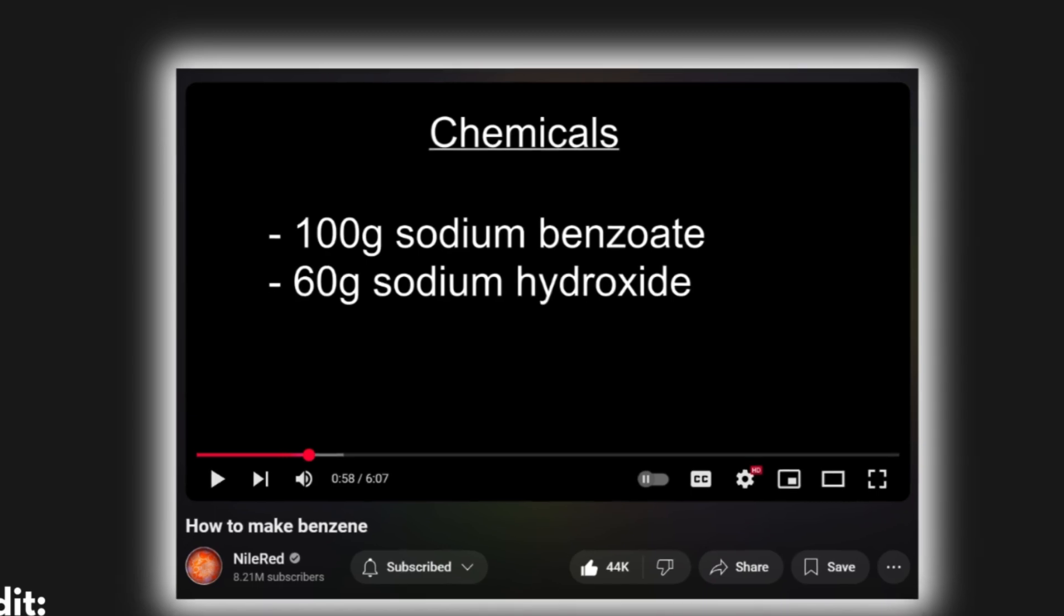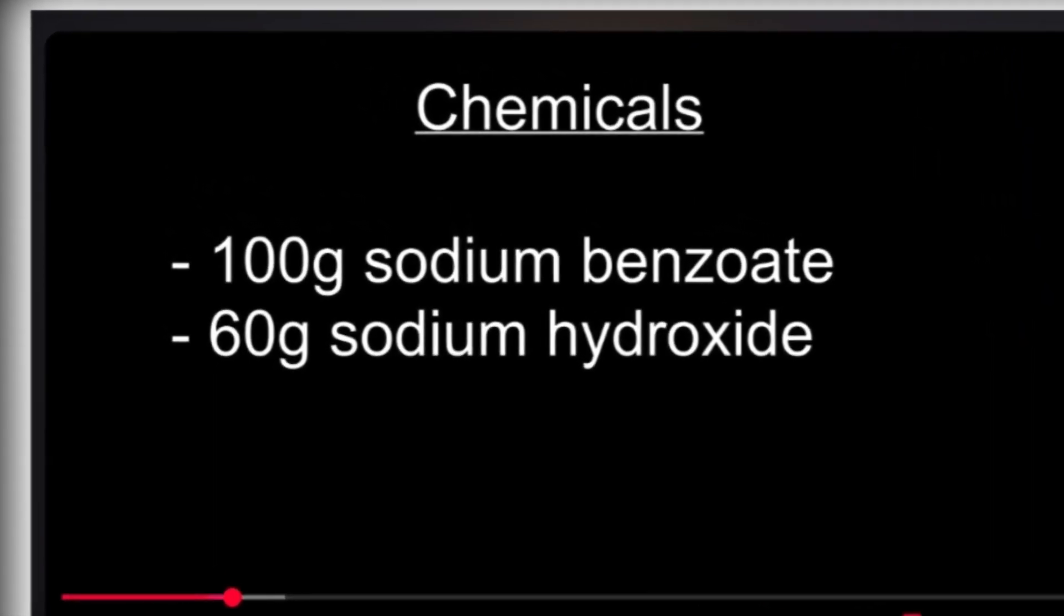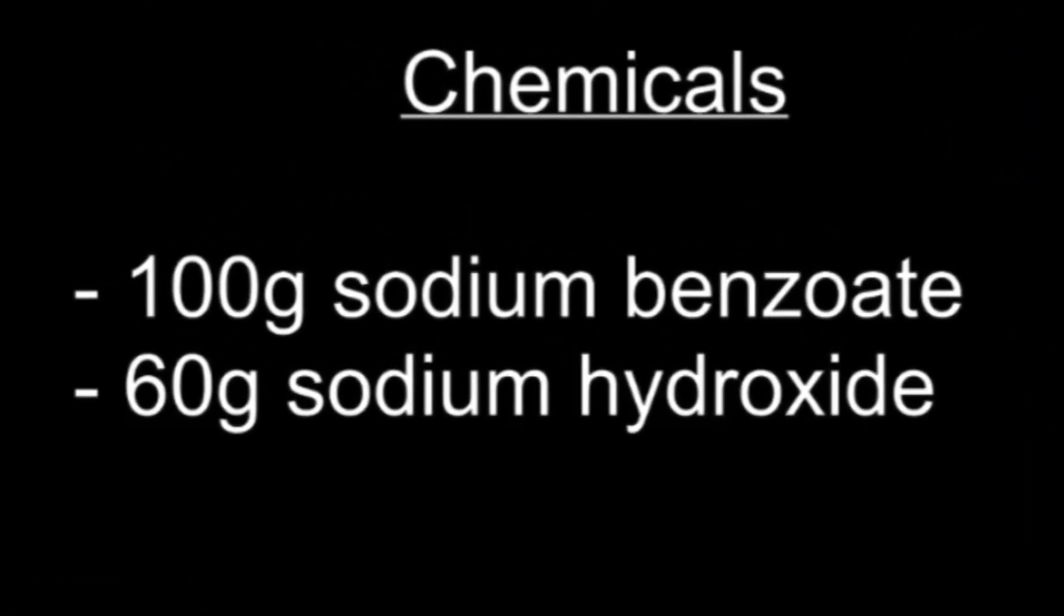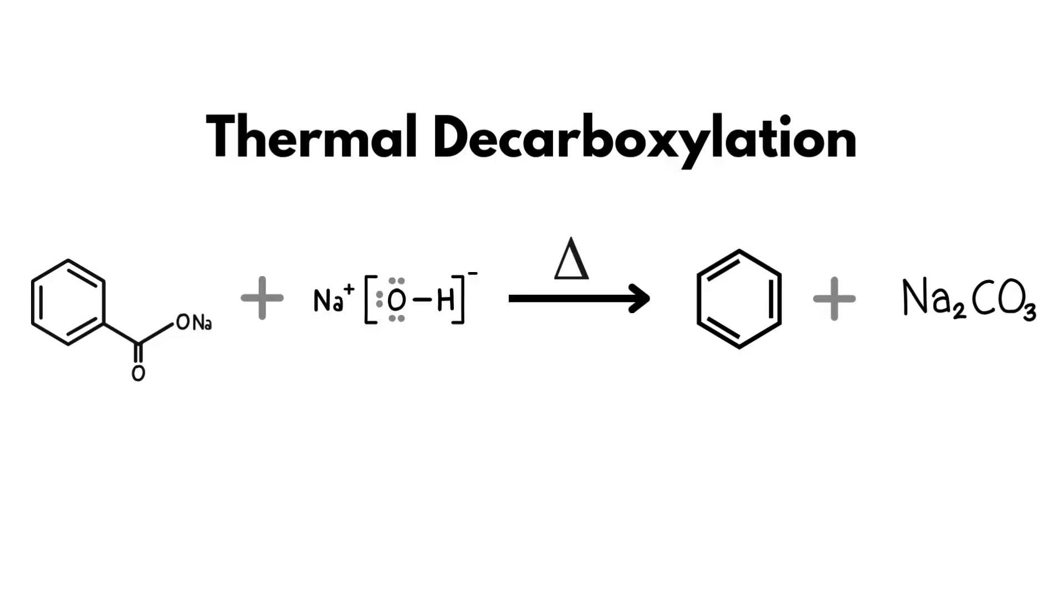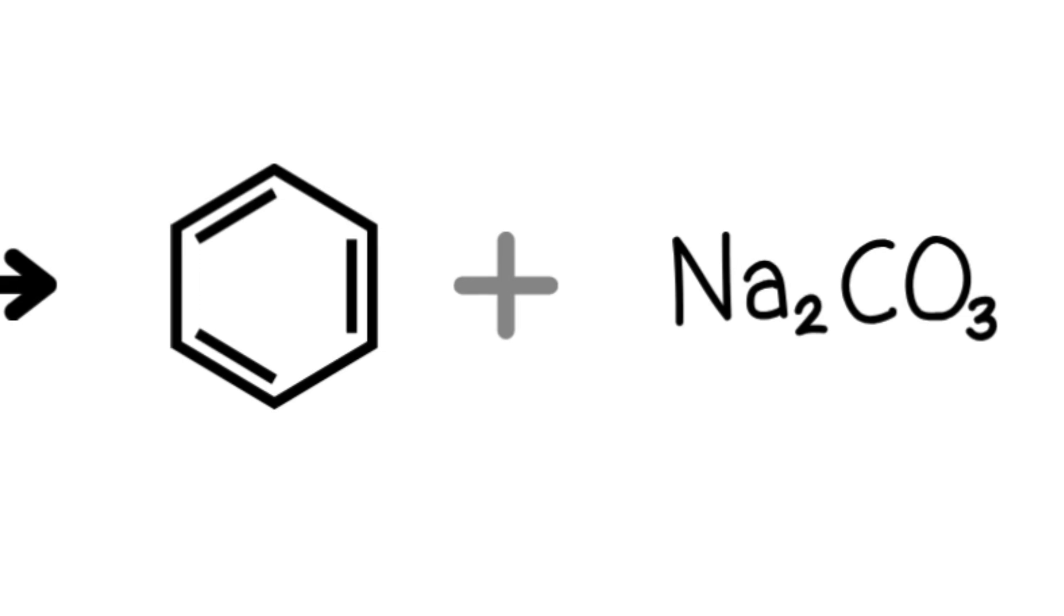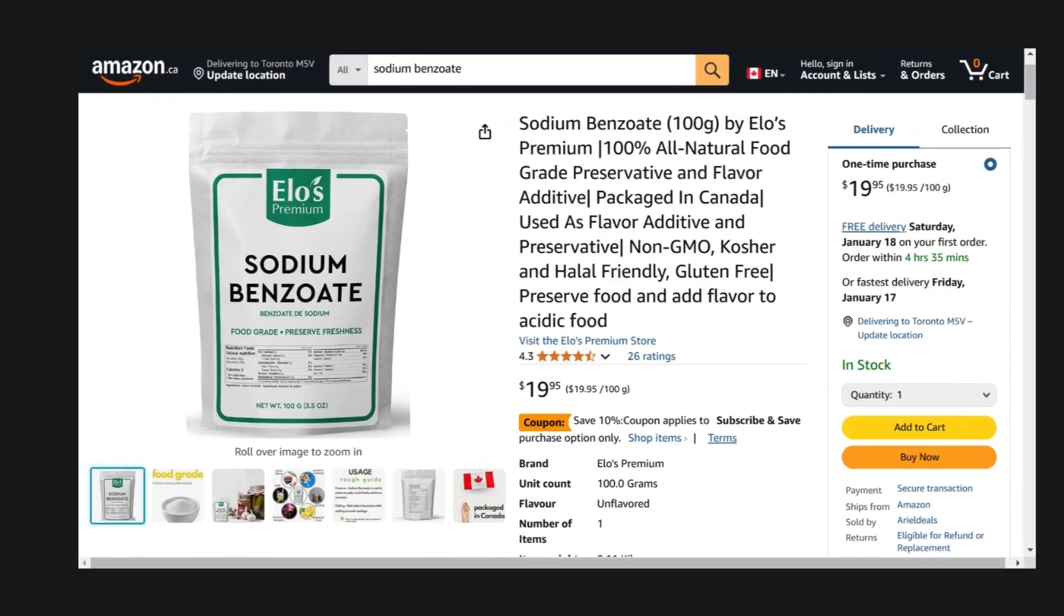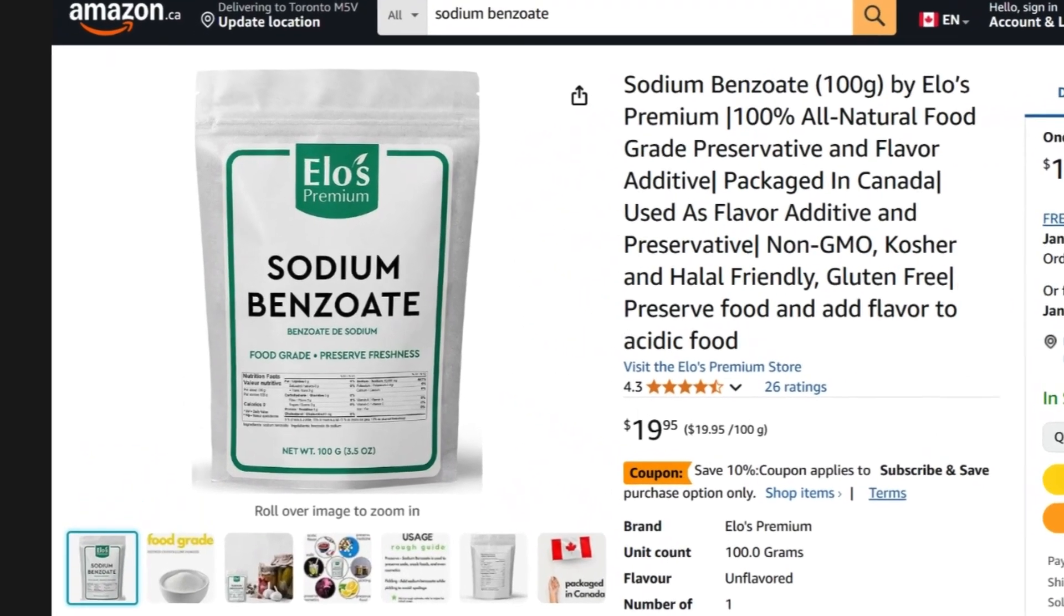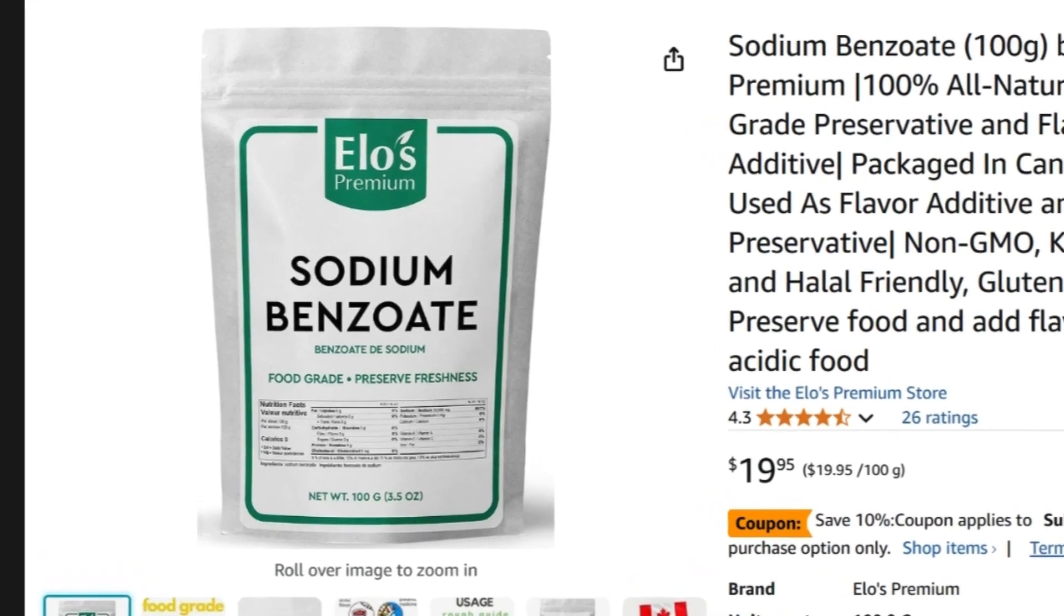This time, after doing some research, apparently people like Nile Red used a ratio of 2 to 1 moles of sodium hydroxide to sodium benzoate, rather than the 1 to 1 from my calculations. Maybe this excess could promote this reaction and maximize products by increasing the surface area. But frankly, I'm not too sure why. Anyways, this time I decided to directly buy sodium benzoate off Amazon rather than trying to make it myself.